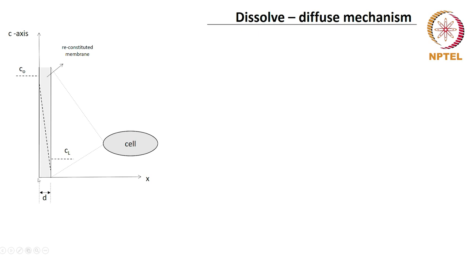This is the concentration axis, this is the distance axis, and this is the thickness of the membrane D. This is the concentration C0 in the liquid on this side of the membrane, and this is the concentration of species I in the liquid on the other side of the membrane. There is a variation in the membrane concentration here, and we are going to look at this in some detail.